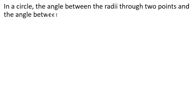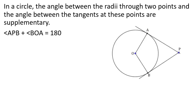In a circle, the angle between the radii through two points and the angle between the tangents at those points are supplementary. We can draw two tangents from a point outside the circle, and the two angles formed are supplementary.